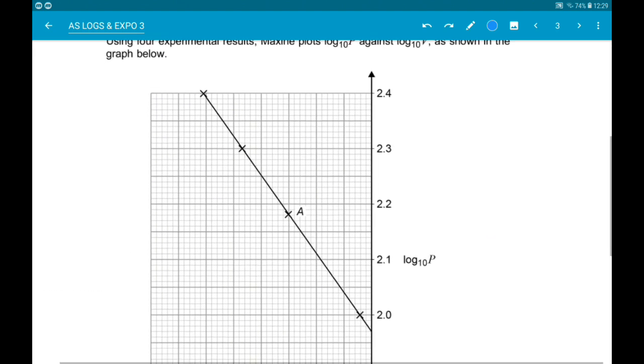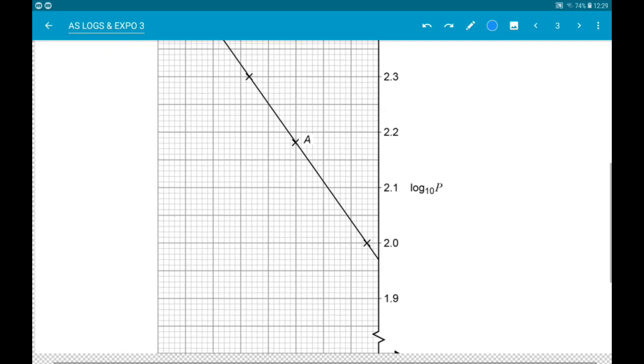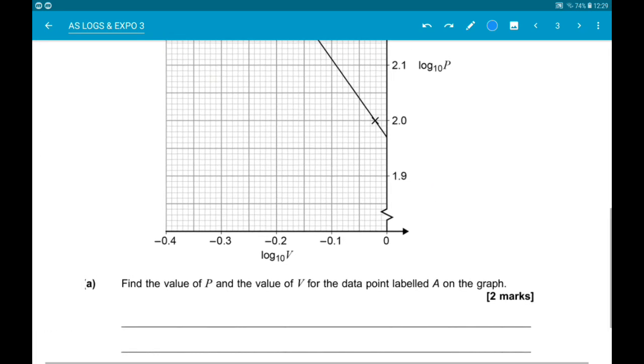Using four experimental results, Maxine plots log10 of P against log10 of V as shown in the graph below. So there's a lovely graph. Part A wants us to find the values of P and V at point marked A on the graph.